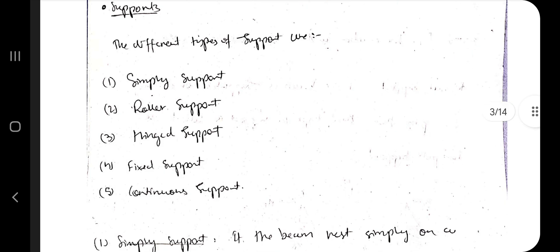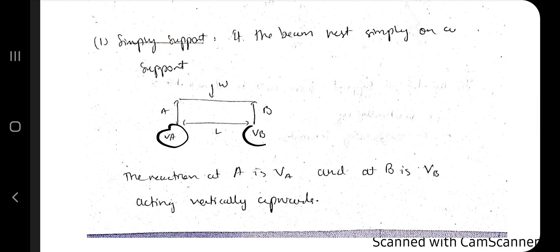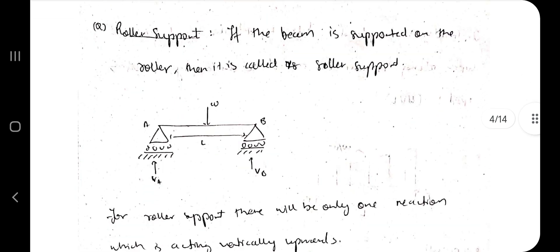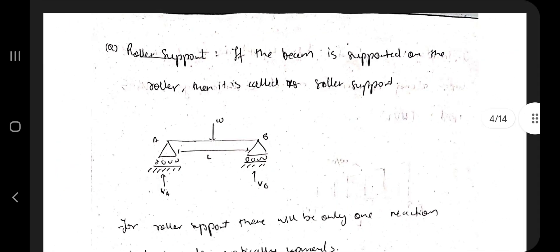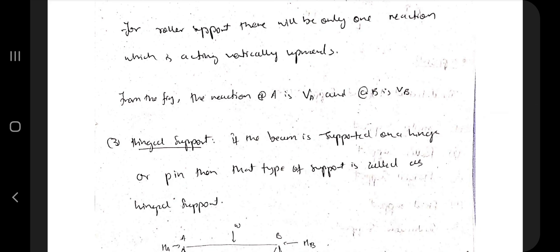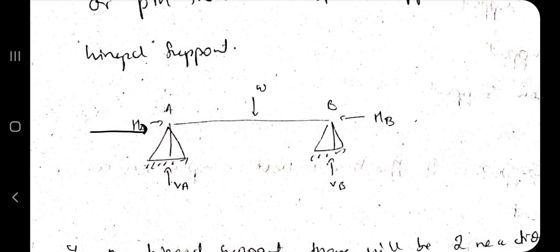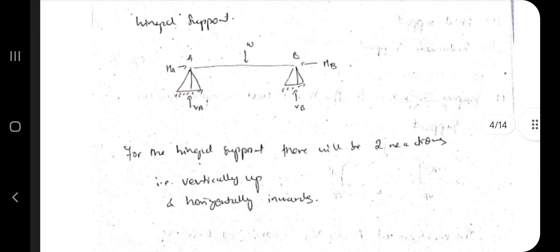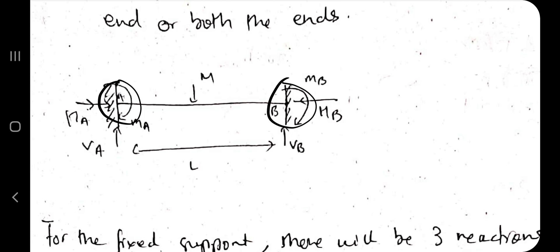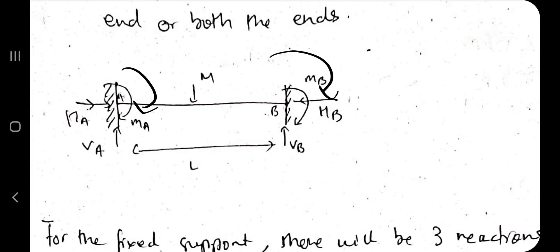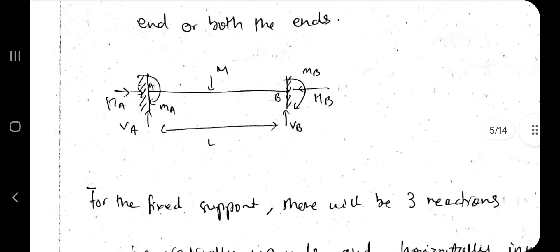There are different types of supports: simple support, roller support, hinge support, fixed support, and continuous support. In simple support, forces at A and B act in the upward direction. In roller support, forces act only upward. In hinge support, forces act in both vertical and horizontal directions, denoted as HA, VA at end A and HB, VB at end B. In fixed support, moments are also considered: MA and MB, where one direction is positive and the other negative, along with H and V components.